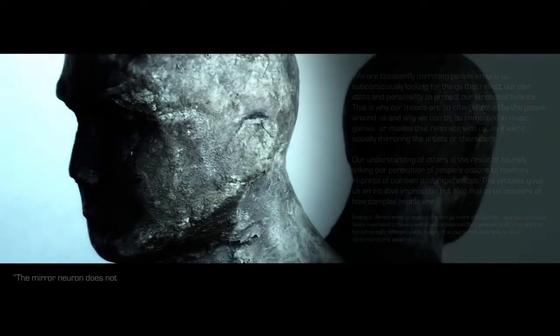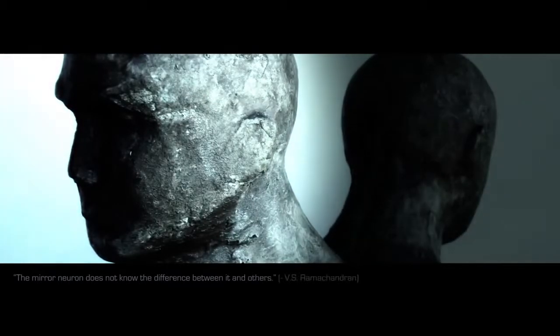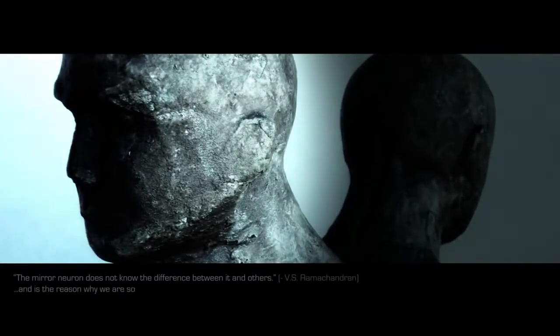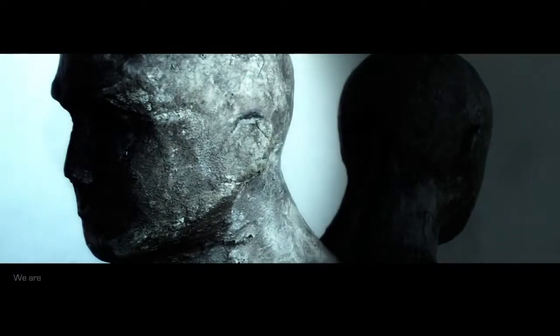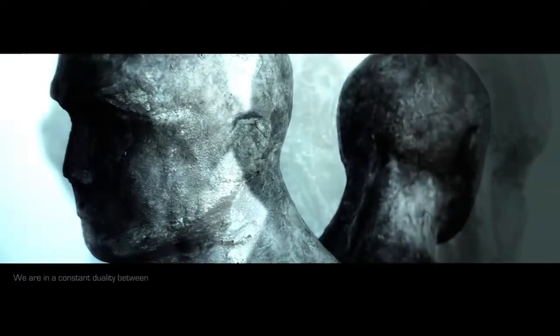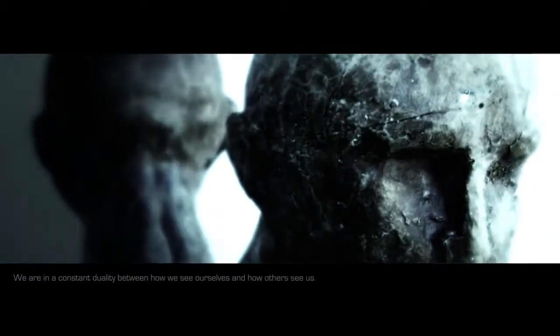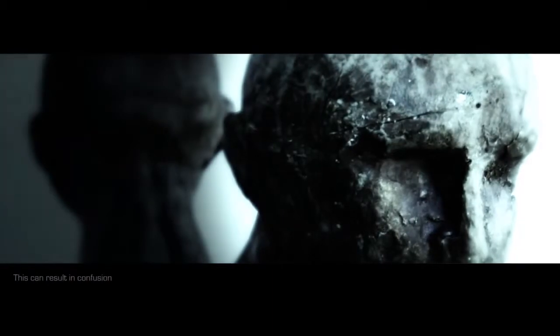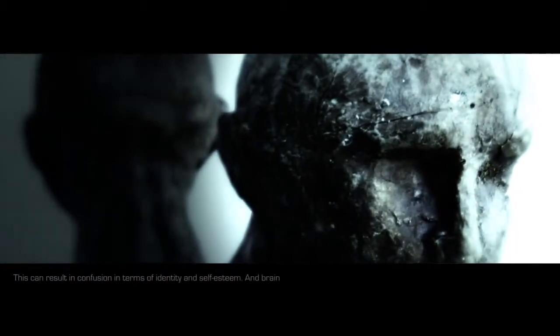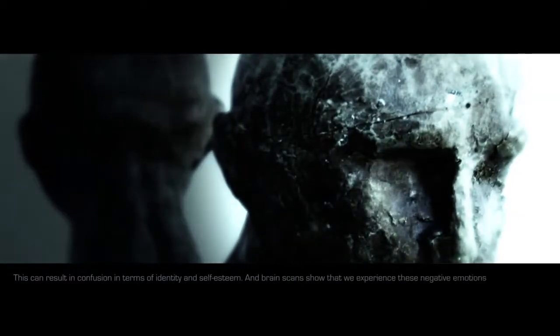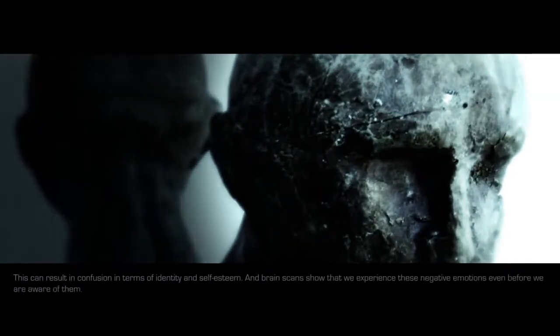The mirror neuron does not know the difference between it and others, and is the reason why we are so dependent on social validation and why we want to fit in. We are in a constant duality between how we see ourselves and how others see us. This can result in confusion in terms of identity and self-esteem, and brain scans show that we experience these negative emotions even before we are aware of them.